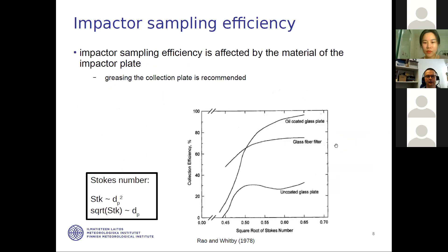Particles that hit the plate may stay there or bounce back into the streamlines, depending on the plate surface and collection substrate properties — the collection substrate lies on the impaction plate. The impactor plate material affects sampling efficiency. In the figure, the x-axis is the square root of Stokes number and the y-axis is collection efficiency, showing three cases: uncoated glass plate, glass fiber filter, and oil-coated glass plate. The best collection efficiency is with the oil-coated glass plate. The difference between oil-coated and uncoated glass plates is quite remarkable, so greasing of the collection plate is recommended in an impactor.